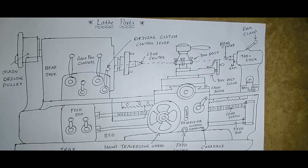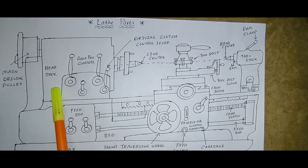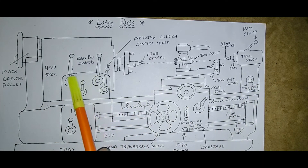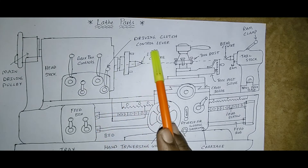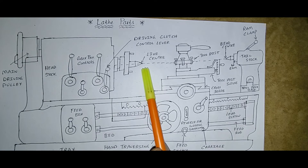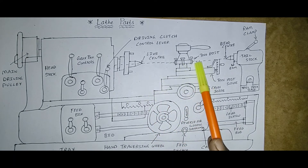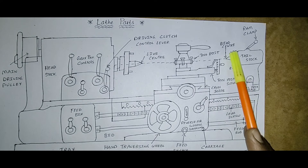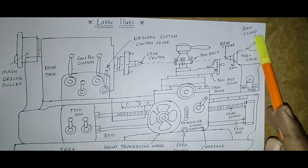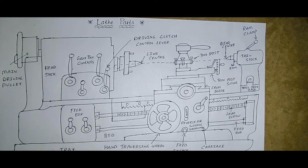First, give a good heading: 'Lathe Parts.' Here you can see the main driving pulley, the headstock, the tailstock, the gearbox controls, the driving clutch control lever, the live center, the tool post, the dead center, the ram, and the ram clamp.